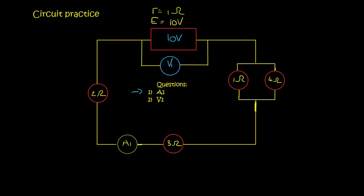So question 1 is to find A1. Now A1 is an ammeter and so it measures current. Now remember we said that current is the same everywhere in series. The only place where it's not the same is when you're in parallel because then it gets to split. But everywhere in series, even going through the battery, it's the same.